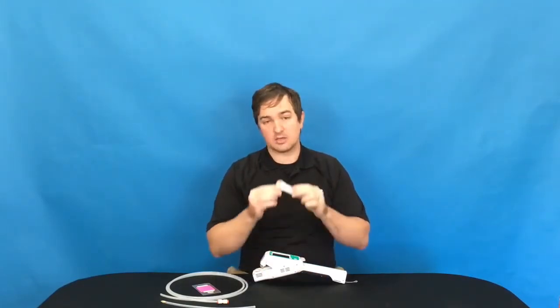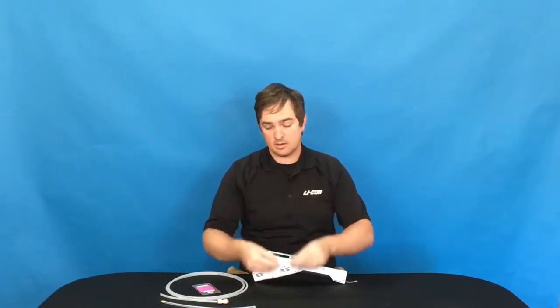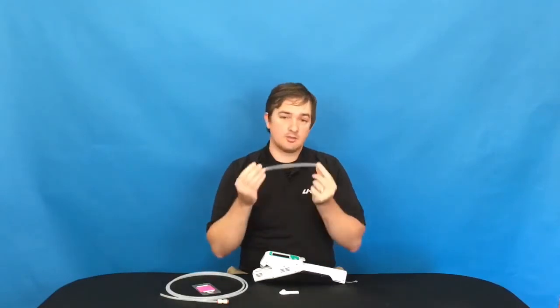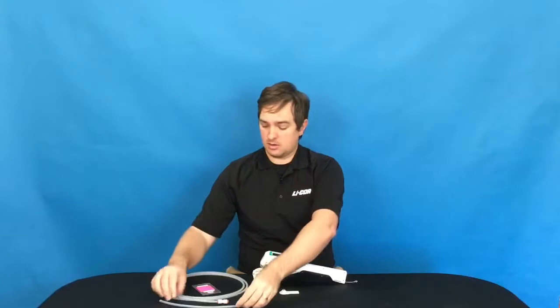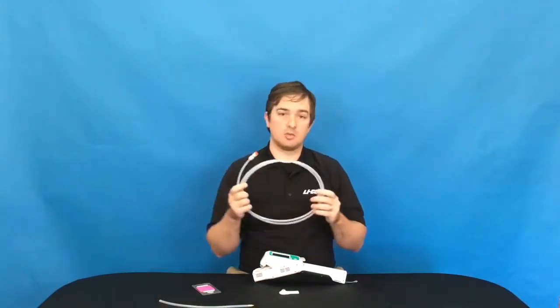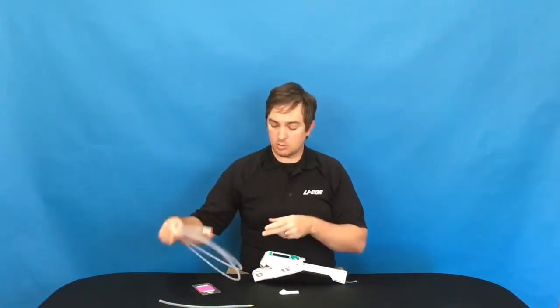The things you will need for this calibration will be the calibration clamp that comes with the instrument, the length of tubing with a hose barb for connecting to this clamp, and some other length of tubing to run to your dew point generator. I would recommend using as short of a length of tubing as possible so that the water vapor flushes through the tubing more quickly.